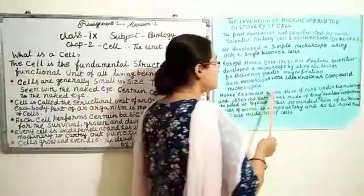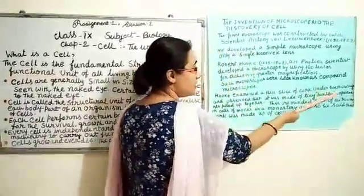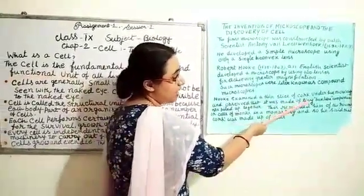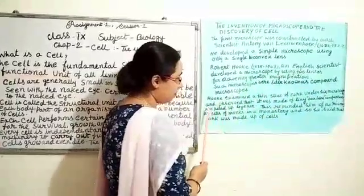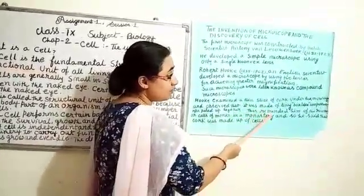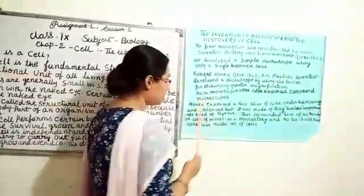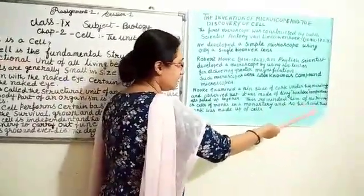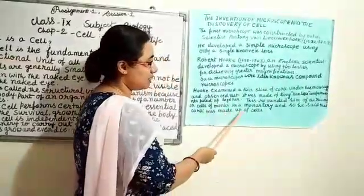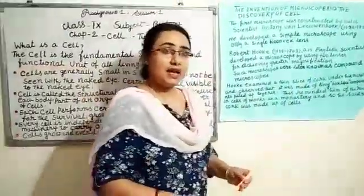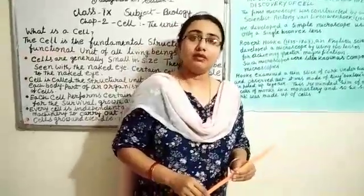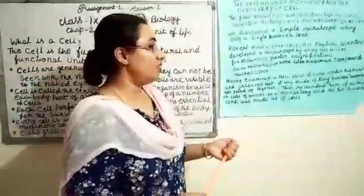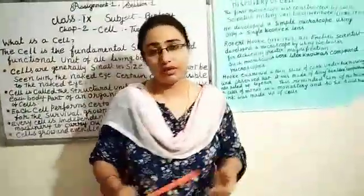Hooke examined a thin slice of cork under his microscope and observed that it was made of tiny box-like compartments piled up together. This reminded him of the rooms or cells of monks in a monastery, and so he said that cork was made up of cells. So, the term cell was coined by Robert Hooke.